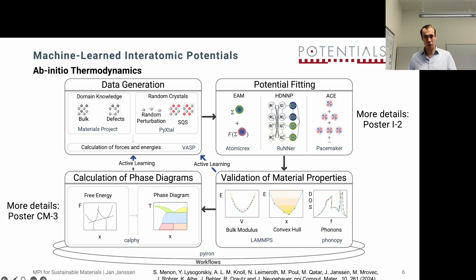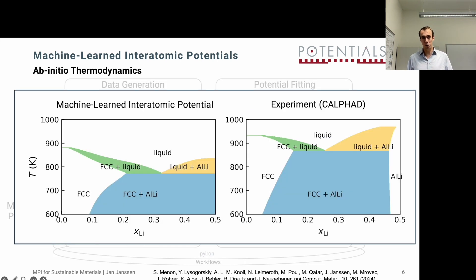Here I show the calculation of a phase diagram directly from ab initio. We start by generating a very diverse set of atomistic structures. We evaluate those with density functional theory and fit different kinds of interatomic potentials, starting from classical embedded atom model interatomic potentials, neural network potentials, and atomic cluster expansion machine learning potentials. Validate those by first comparing energies and forces in comparison to the density functional theory predictions, and material properties which are still accessible from density functional theory, like the bulk minus convex hull or phonons. And then finally comparing material properties which are not accessible from density functional theory, like the phase diagram, to experiment.